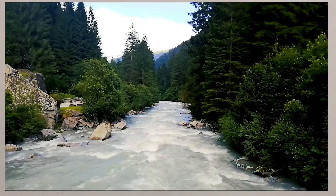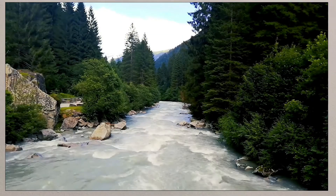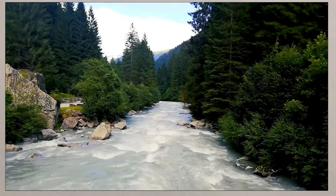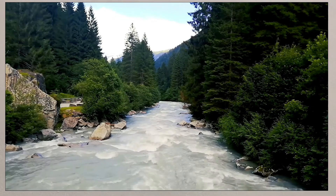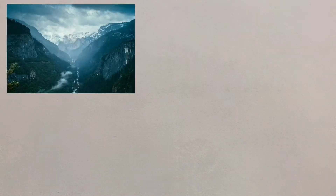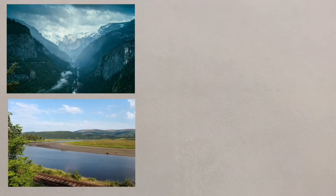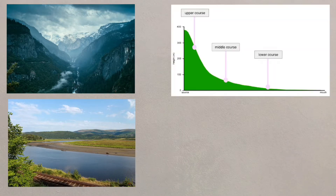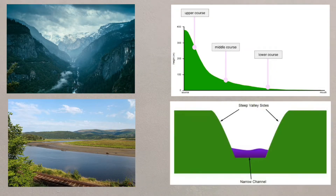Rivers crisscross our entire country, and they continually shape the land where they flow. The shape of the river valley changes as they flow downstream, and we can see how this happens by looking at the long profile and the cross profile.